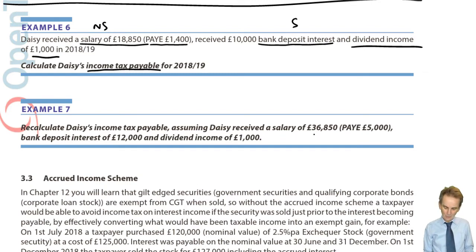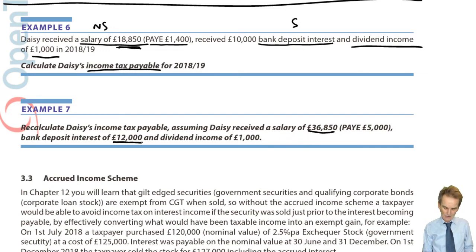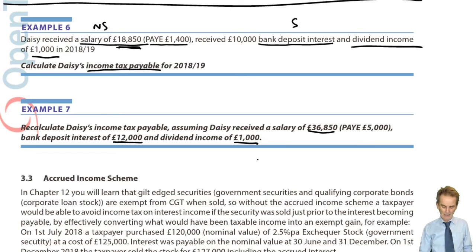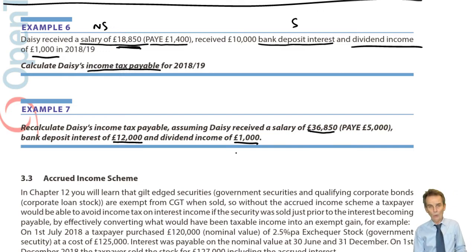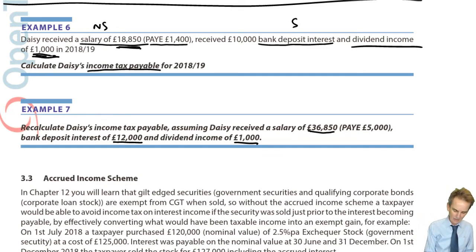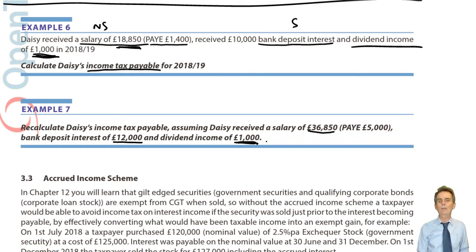In example seven, we increase the salary from £18,850 to £36,850, with bank deposit interest of £12,000 and dividend income still of £1,000. This will push the taxpayer into higher rate. But dividend income is still not a problem because it's only £1,000 — well within the £2,000 nil rate band. Please work through examples six and seven independently.